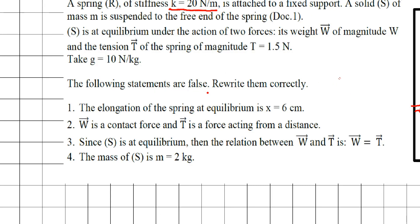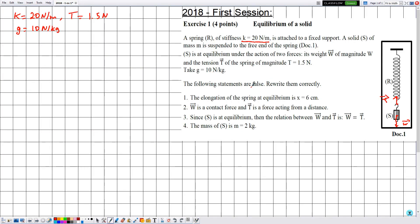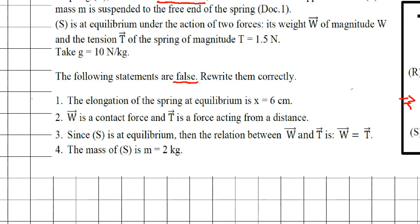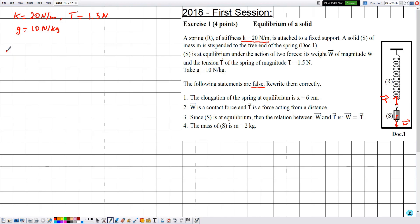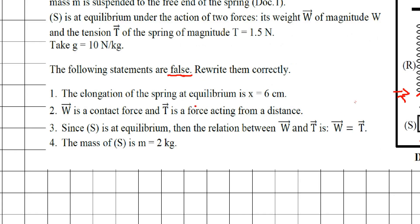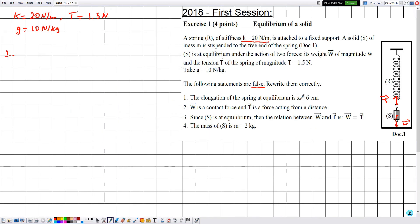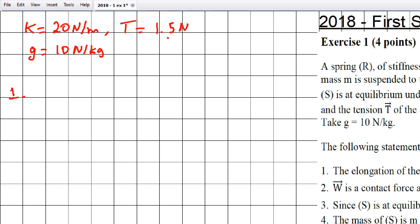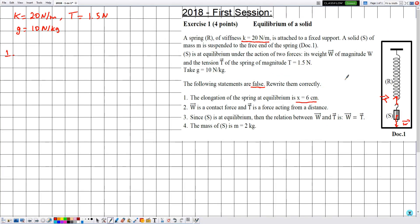The following four statements are all false, and we need to rewrite them correctly with justification. Statement one says the elongation of the spring at equilibrium is x equal to 6 centimeters. We need to identify that this elongation value is wrong. We have the stiffness k and the tension T, so we apply Hooke's Law to find x.